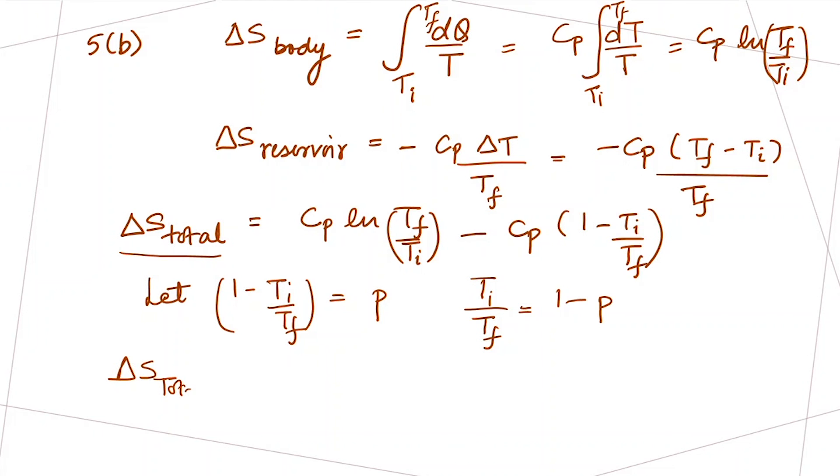Let's write this delta S total expression in terms of P. The delta S total will become CP log of (TF over TI), which can be written as the inverse of 1 minus P, and this is CP times P. We can take CP common.